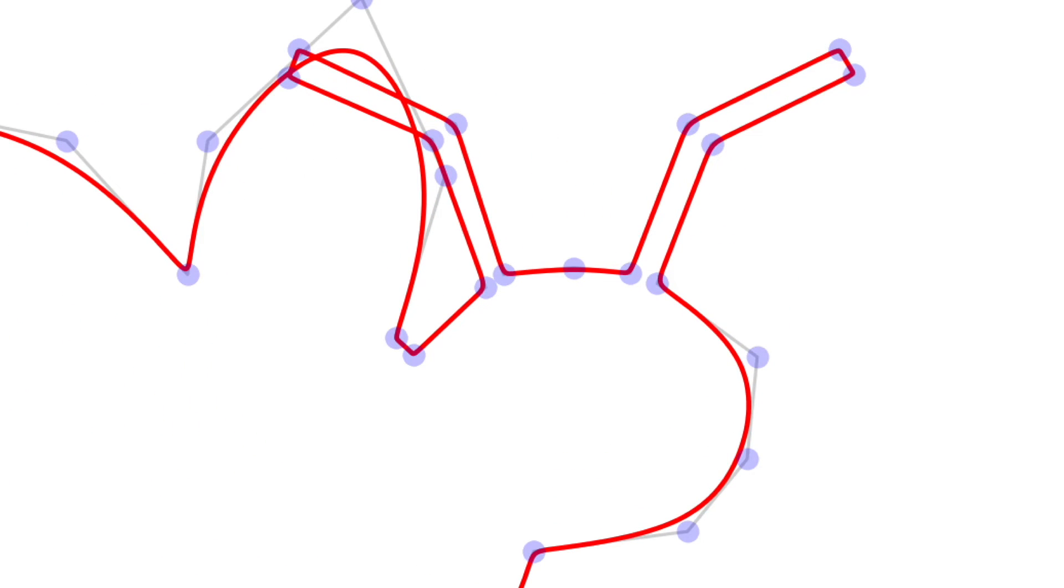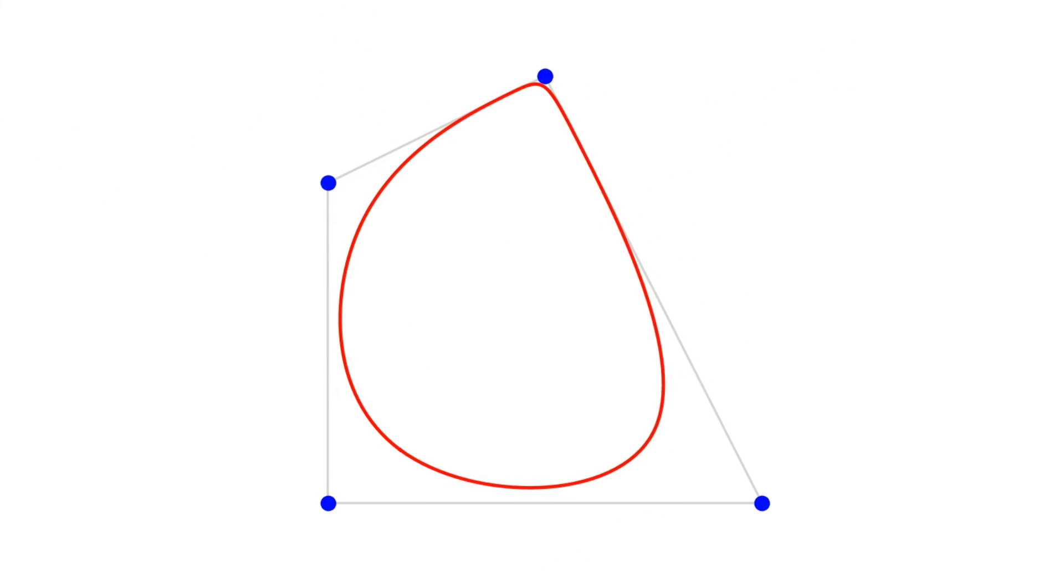You can get sharper corners by repeating the same control point twice. All of the green points shown here were doubled. And if you repeat the same point three times, that will force the curve to pass through it.